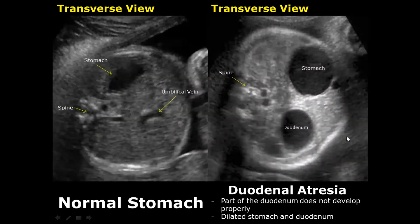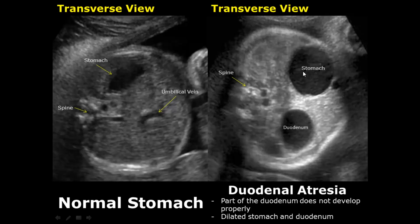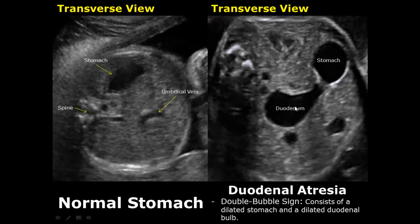A normal fluid-filled duodenum cannot be seen on ultrasound; it is only visible when dilated. In duodenal atresia, part of the duodenum does not develop properly, leading to dilation of both the duodenum and the stomach. Here we see two dilated structures — one is the stomach and the other is the duodenum. The double bubble sign is the name given to this appearance, where the stomach and the duodenum both appear as two dilated anechoic structures. This is a sign of duodenal atresia.